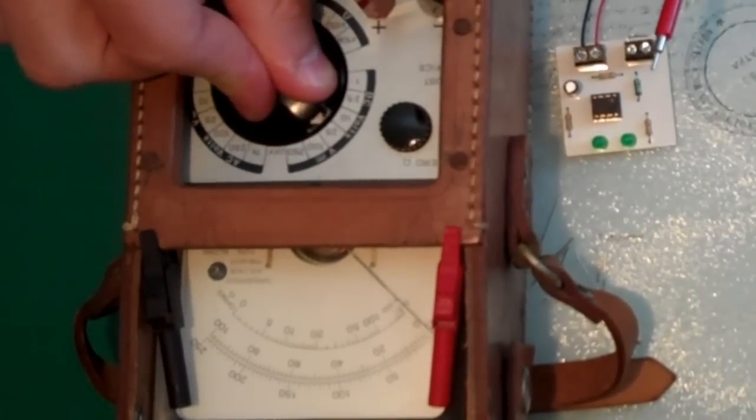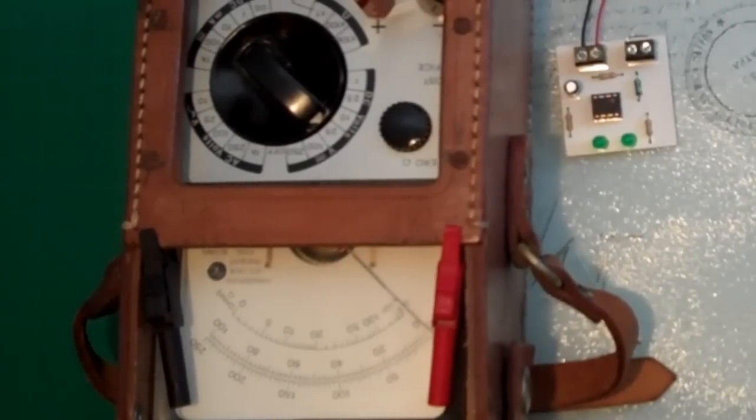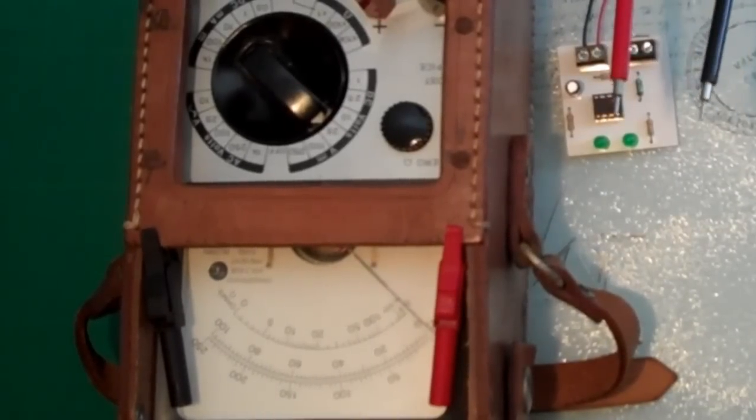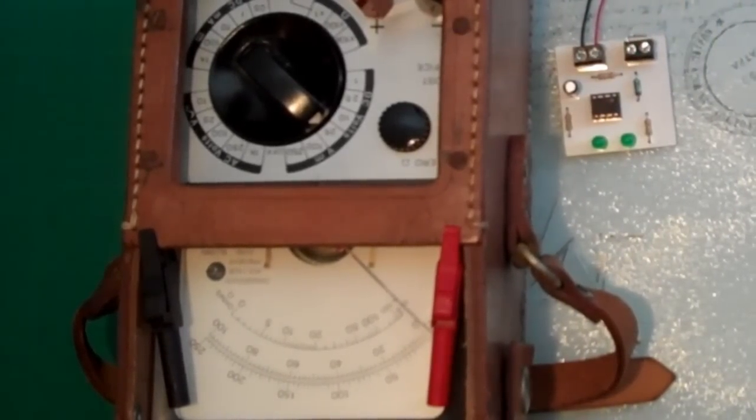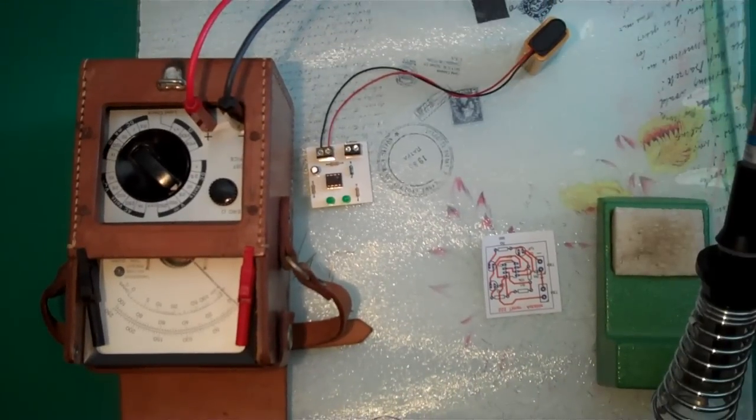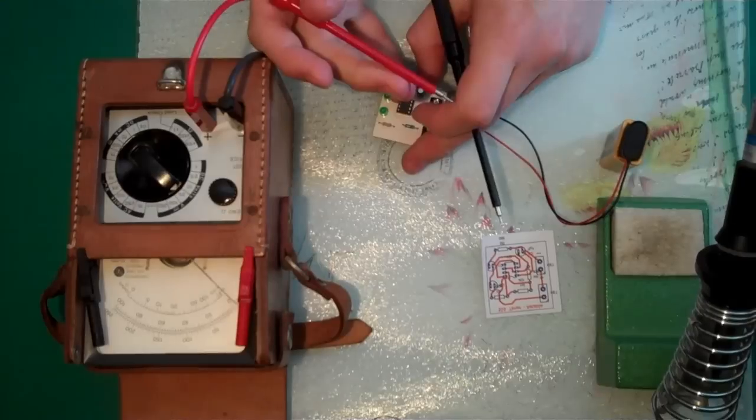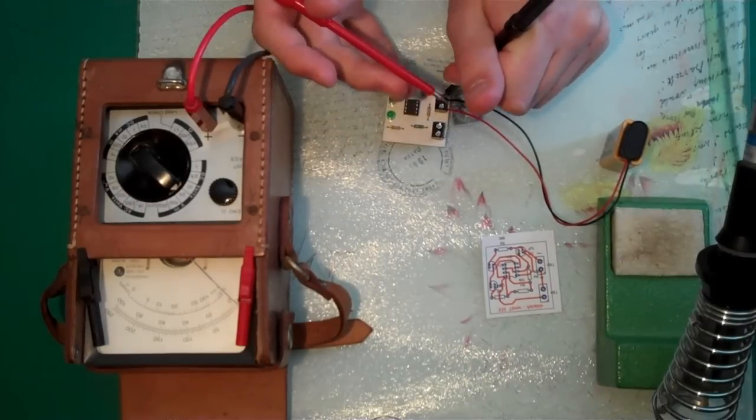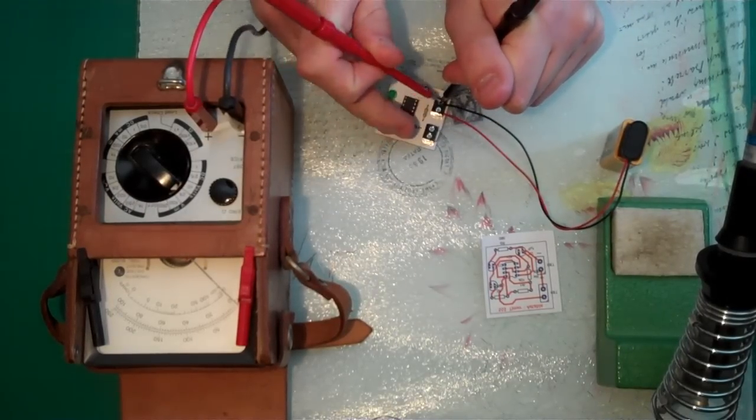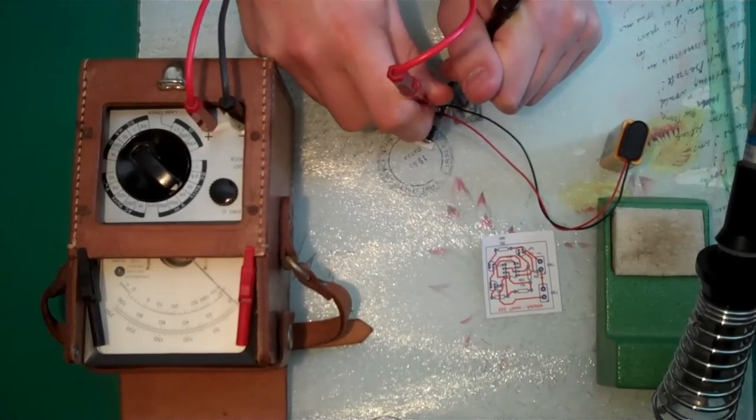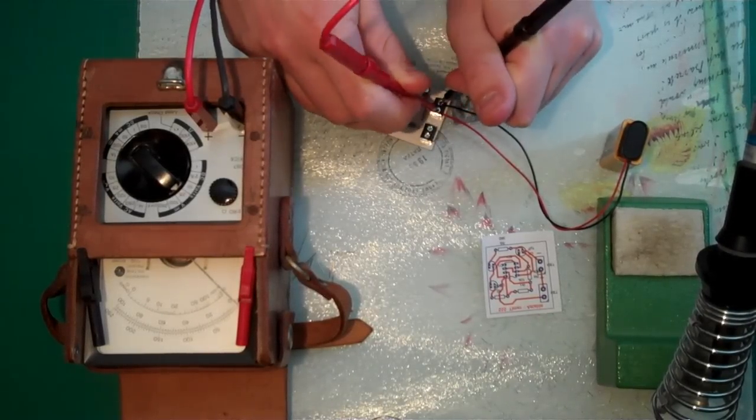I'm going to set it to 25 volts DC. This means that it can measure between the two probes a voltage up to 25 volts DC on full scale deflection. And then anything in between is a lesser voltage. I'll just put these on here. So the black on the black contact and the red on the red. And we're not getting power to the circuit.